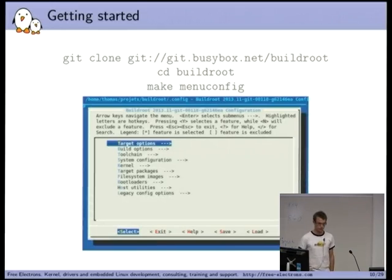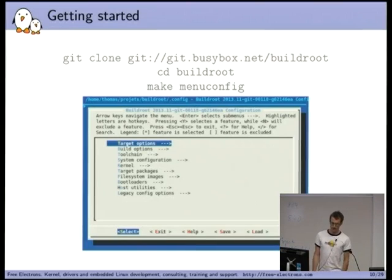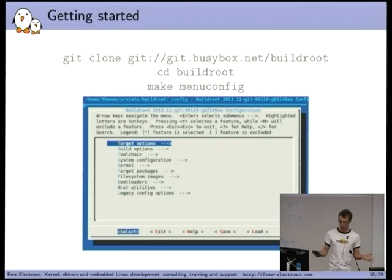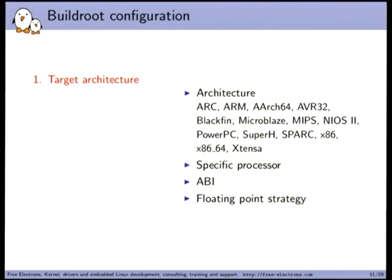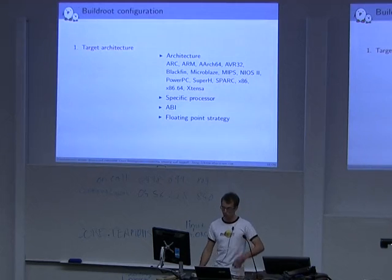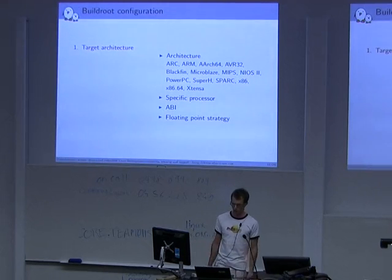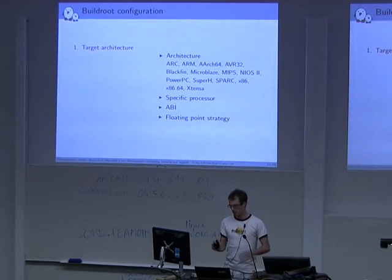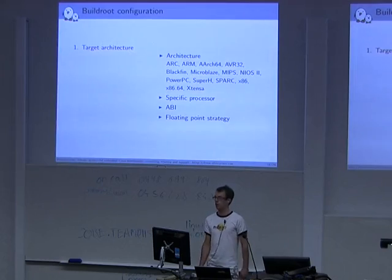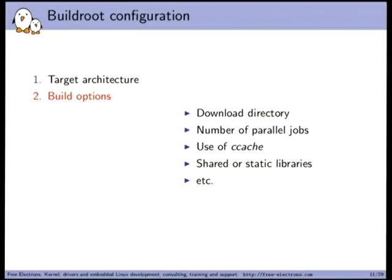To get started with Buildroot, grab it from the Git repo and run `make menuconfig`. You'll get the familiar menuconfig interface to configure all aspects of the embedded Linux system you're going to produce. First, you select the architecture — there are several supported, including ARM64, SuperH, NIOS2, and all the more common ones — and then more specific options for each architecture, like processor type and floating-point strategy.